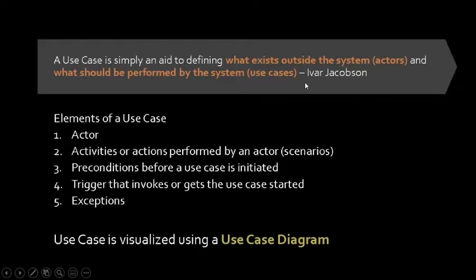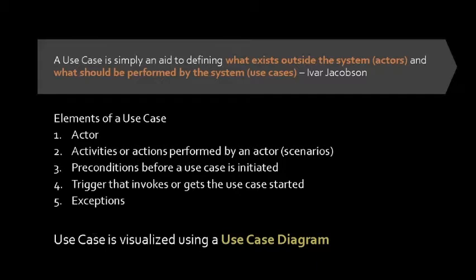These are the elements we need to consider when creating a use case. Our use case should have an actor. It should have activities or actions performed by an actor — those are the scenarios. We need preconditions before a use case is initiated. We need a trigger that invokes or gets the use case started. And lastly, we need exceptions. A use case is visualized using a use case diagram.